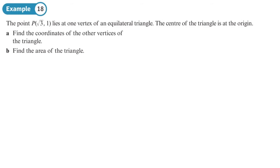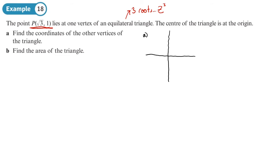So here we have a point on a vertex — a vertex of an equilateral triangle. An equilateral triangle tells me something about three roots, so I'm going to be thinking of something like z cubed. The center of the triangle is at the origin. We need to find the coordinates of the other vertices of the triangle, and then find the area. I'm going to start with a diagram to help me out. So I'm going root 3 across and 1 up.